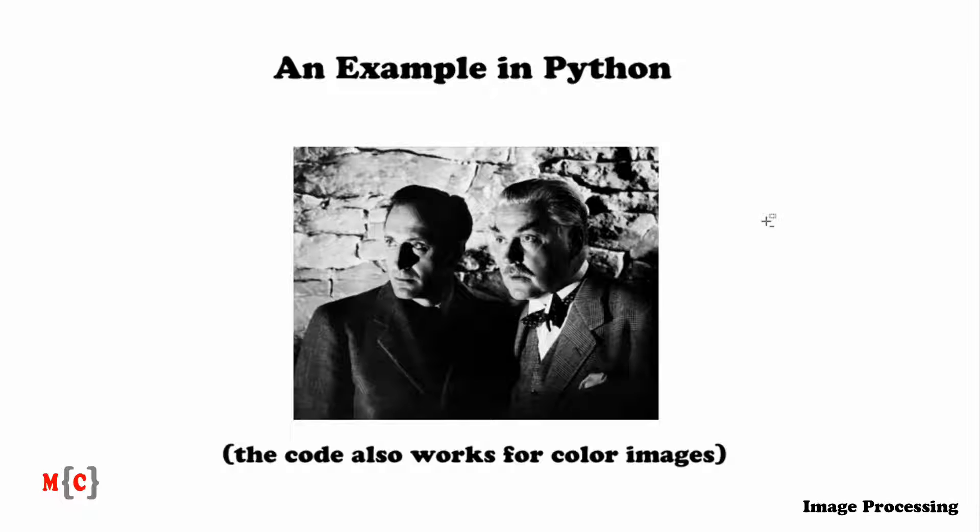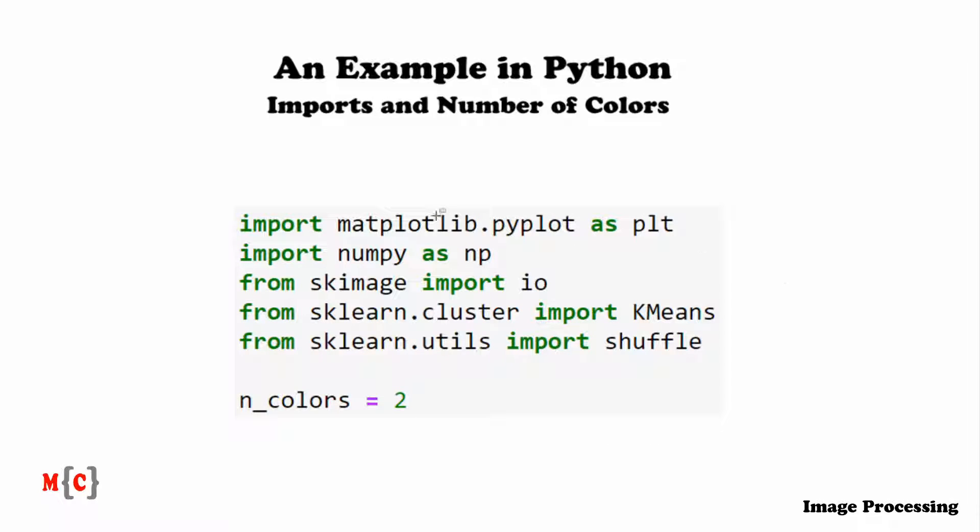Let's first look at the imports that I'm using to create the code. These are the following packages. I'm using matplotlib, numpy, skimage, and sklearn to achieve this. So all we need is just these four packages. Also, I'm going to predefine the number of colors. And this value represents the number of output values that we end up with after quantization.